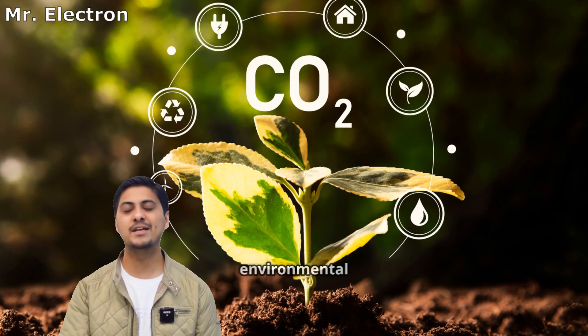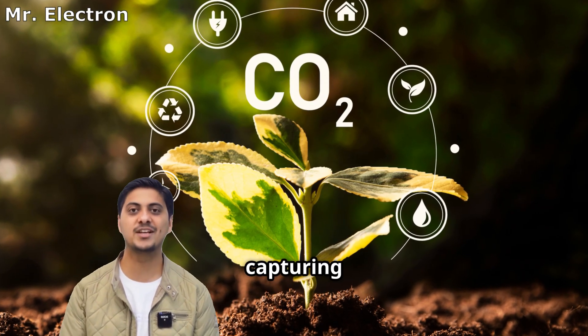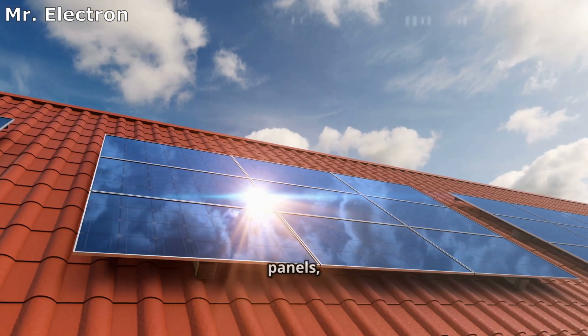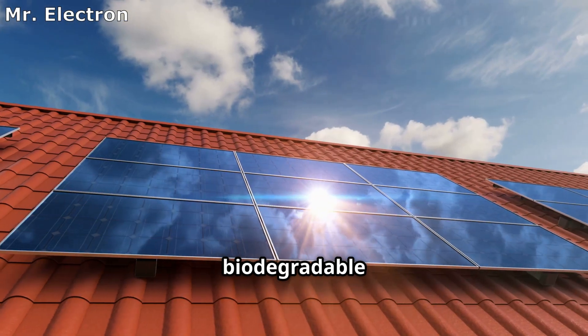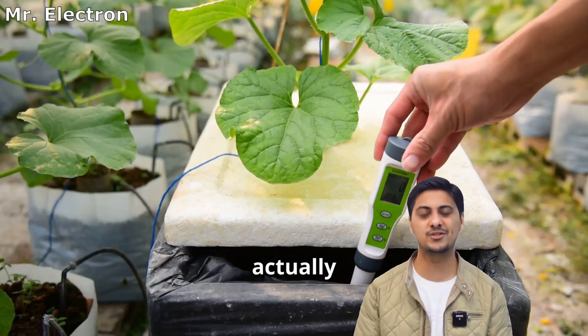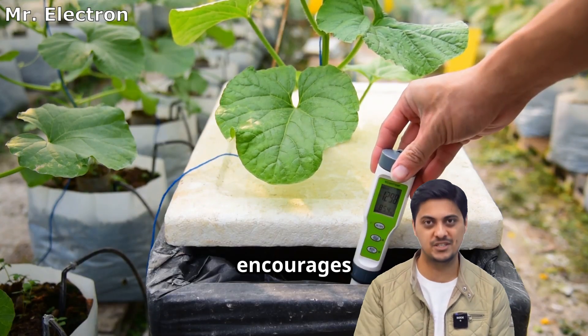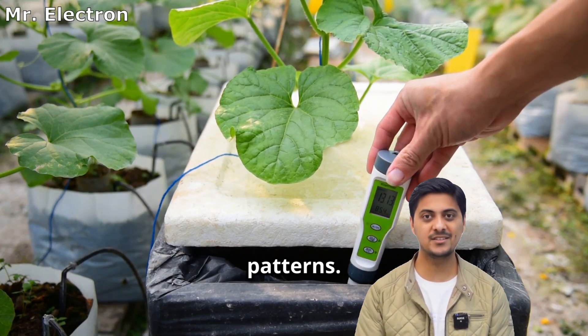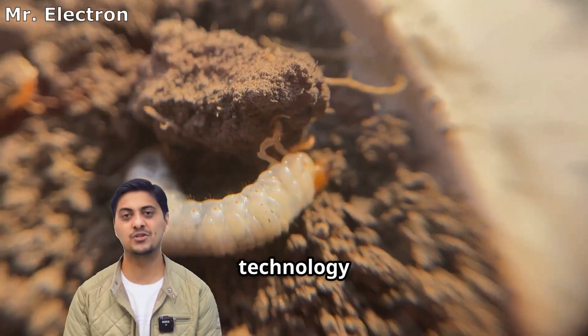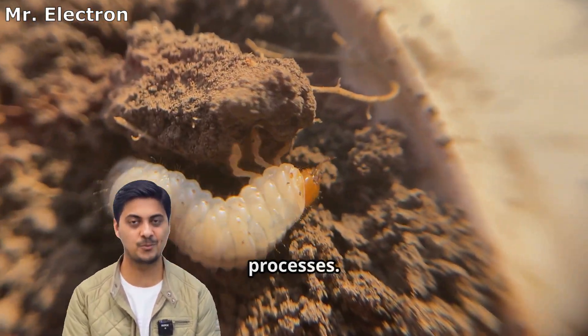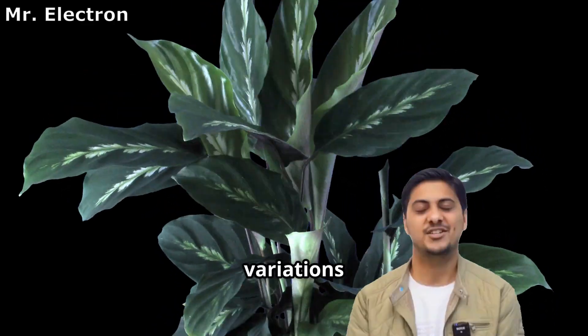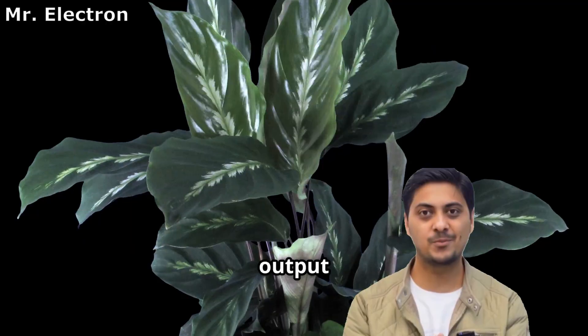These systems provide dual environmental benefits by capturing carbon while producing clean energy. Unlike electronic solar panels, plant systems are biodegradable and create zero electronic waste. Soil health actually improves because the system encourages beneficial bacterial growth patterns. Natural ecosystems remain undisturbed since the technology works with existing biological processes. These systems adapt naturally to seasonal variations and maintain power output year-round.